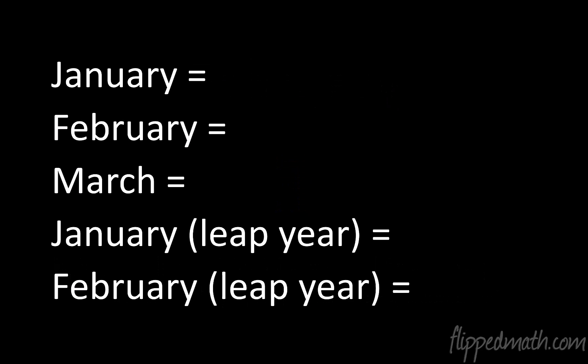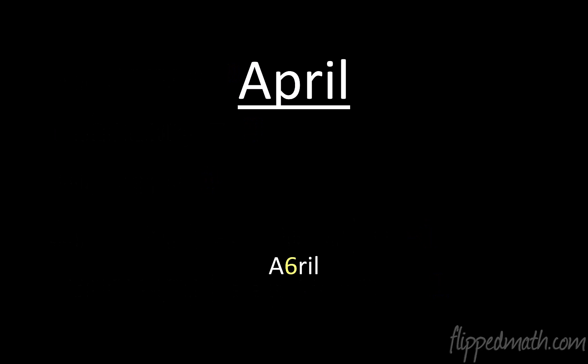Let's review: January — zero. February — March was a three, and February likes March, so it's also a three. March is the third month — three. Now, if it's a leap year, January is negative one and February is two. We've got those first three months down.